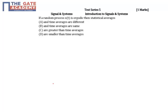In the given statement, he's asking if a random process x(t) is ergodic, then its statistical average... Generally, a function x(t) is said to be ergodic if its statistical average and time average are the same.